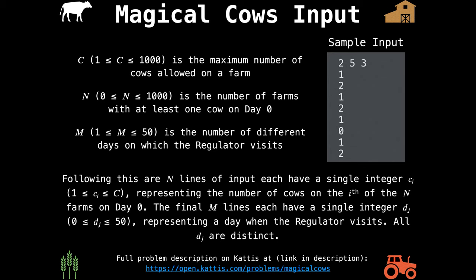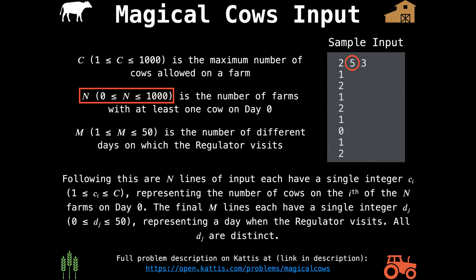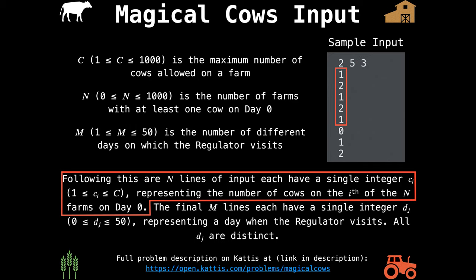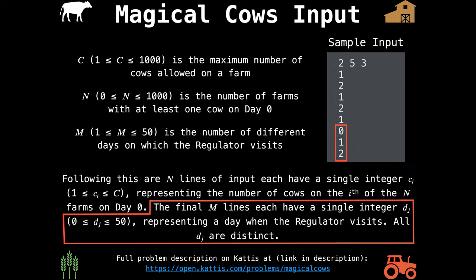We're given three variables: C, n, and m. C is the maximum number of cows allowed on a farm. n is the number of farms with at least one cow on day zero. And m is the number of different days on which the regulator visits. We're also given n initial cow counts, each between one and C, and m lines representing all the days the regulator is coming to visit — these are queries we need to answer. All visit days are distinct integers between zero and 50.